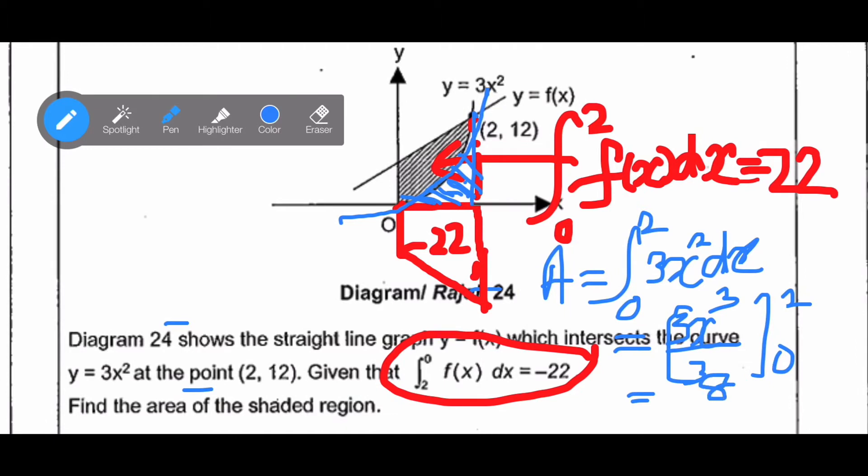So I will get 3x cubed over 3, and then I will sub the limit from 0 to 2. So I will get answer 8 for the area shaded in blue color.